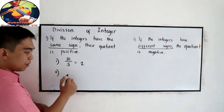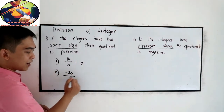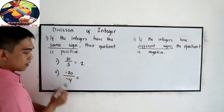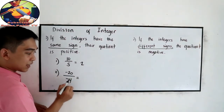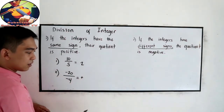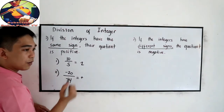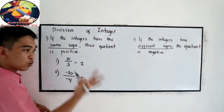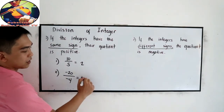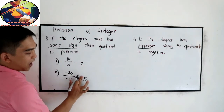Number 2: negative 20 divided by negative 4. Negative by negative, so that is positive. 20 divided by 4 — counting: 4, 8, 12, 16, 20 — so that is 5.